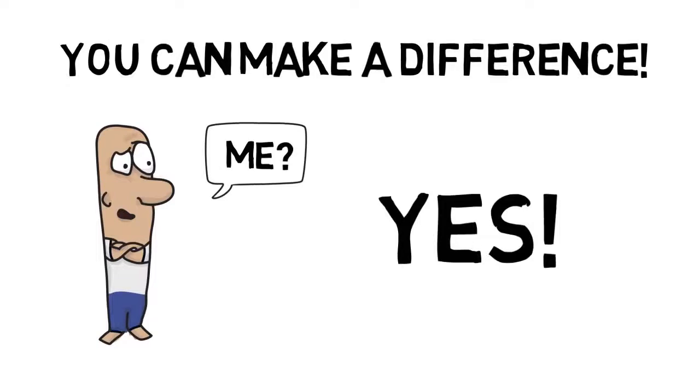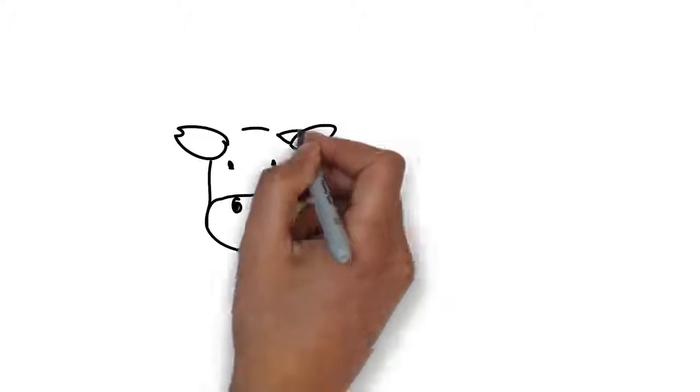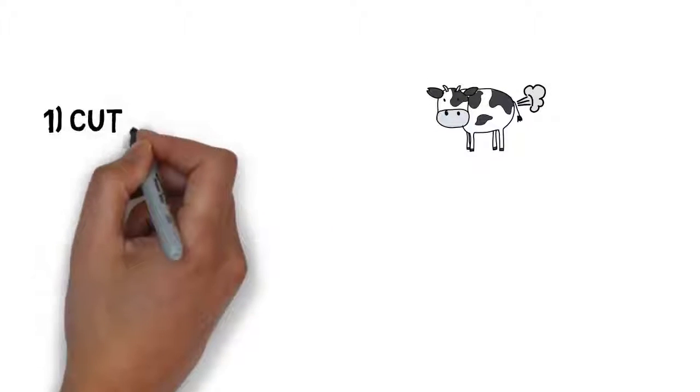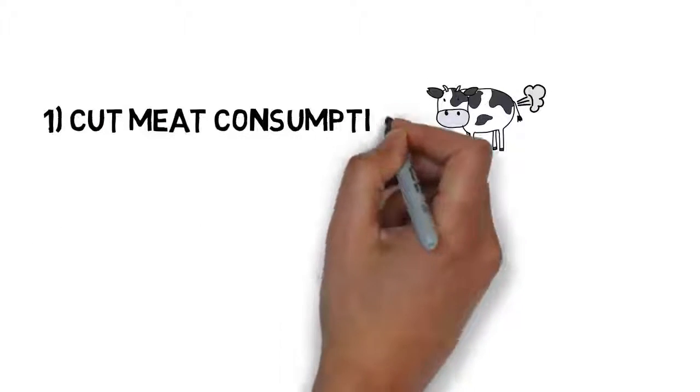First, you need to know that animal agriculture is a big contributor to climate change. So reducing your meat consumption is the first and easiest thing you can do.